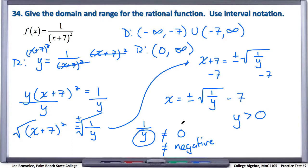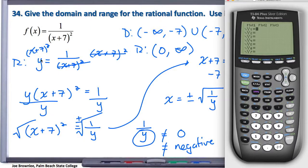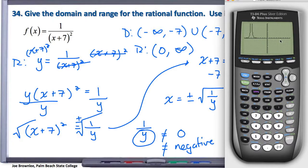Let's use the calculator to confirm. We'll go to the y equals screen and enter 1 divided by x plus 7, that quantity squared. Looking at the graph, notice this graph doesn't exist anywhere below y equals 0 — it only exists for y values larger than 0, confirming our range. And we can see the domain goes from negative infinity up to negative 7, where there's an asymptote, and then picks back up at negative 7 going out towards positive infinity.